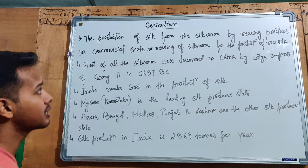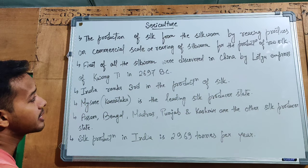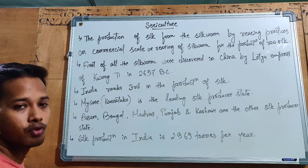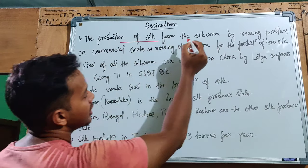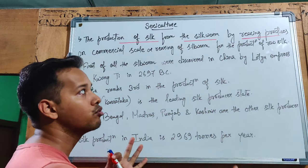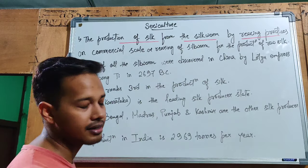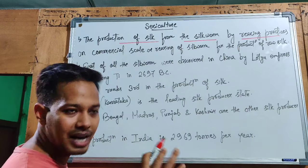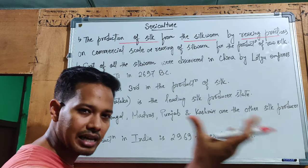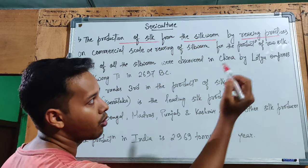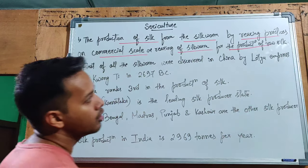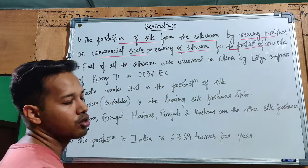Today we are discussing sericulture. The definition of sericulture is: the production of silk from the silkworm, an insect, by rearing practices on a commercial scale. Or simply: rearing of silkworm for the production of raw silk. This is called sericulture.